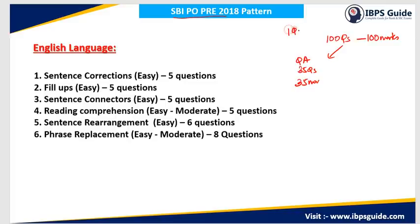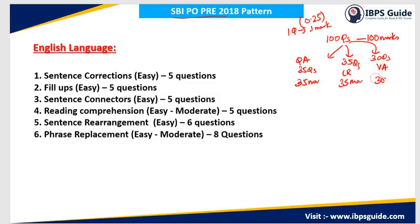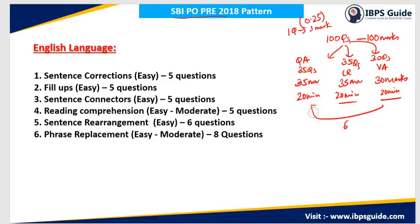One question was carrying one mark, and there was a penalty of 0.25 marks in case you get one question wrong. There were 35 questions from quantitative aptitude carrying 35 marks, 35 questions from logical reasoning carrying 35 marks, and 30 questions from verbal ability carrying 30 marks. The time devoted for each section was 20 minutes — 20 minutes per Quant, 20 minutes for logical reasoning, and 20 minutes for verbal ability, making a total of 60 minutes.